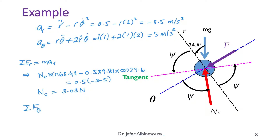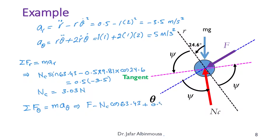Summing forces along the transverse direction: ΣF_theta = m·a_theta. This gives F − N_C·cos(63.43°) + 0.5·(9.81)·sin(24.6°) = 0.5·(5). Solving this equation, we get F = 1.8 Newtons.